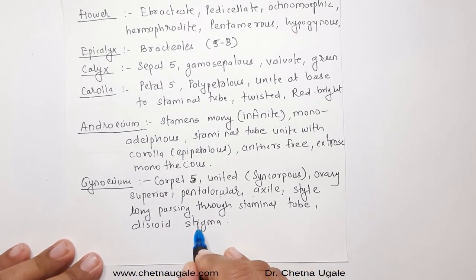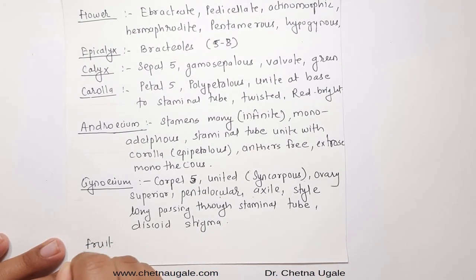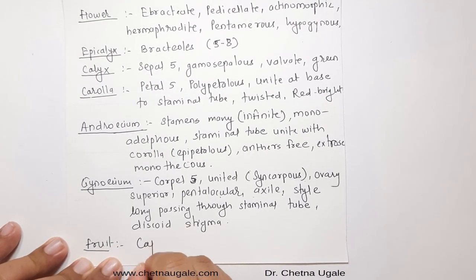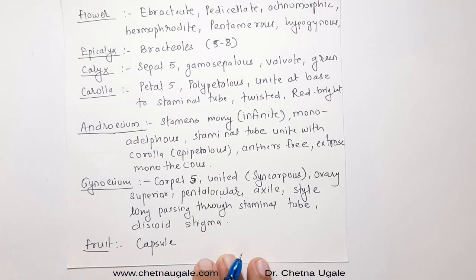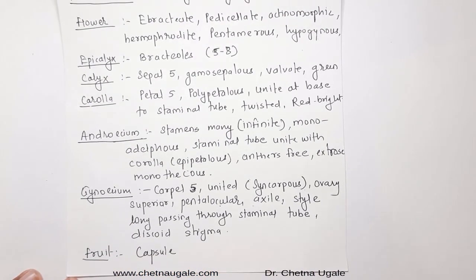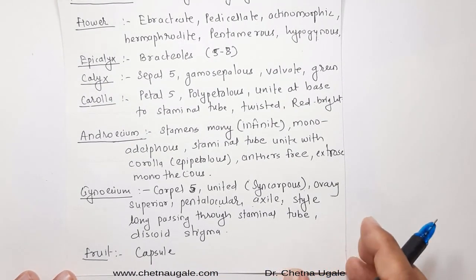The next one is the fruit. The fruit is a capsule or schizocarp, and it splits into a large number of mericarps. The typical fruit of the Malvesi family is the capsule.